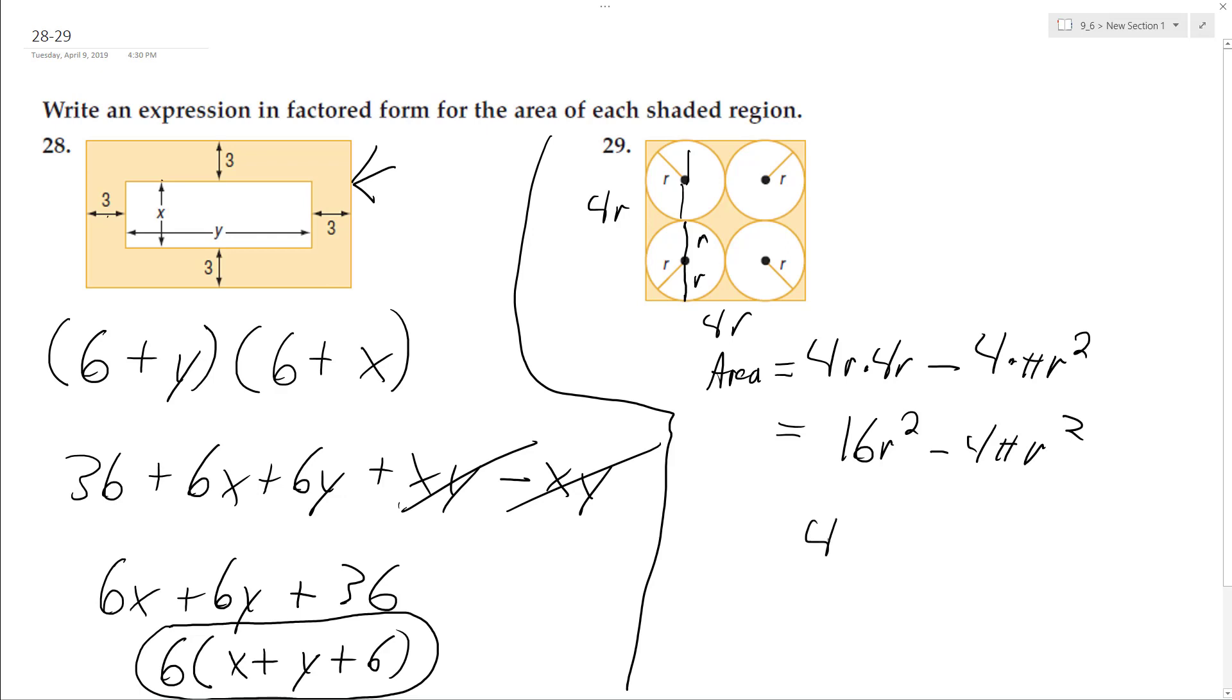We can factor out a 4r squared, so we end up with 4r squared times the quantity 4 minus pi. And that's 4 minus 3.14, but here's the area of the shaded region.